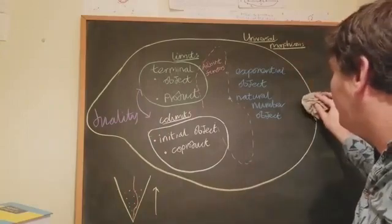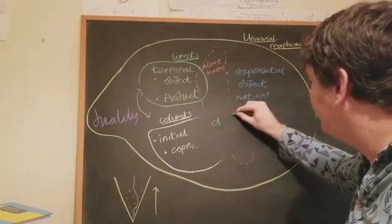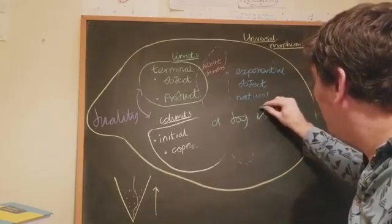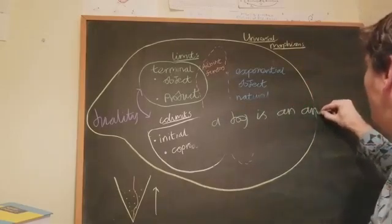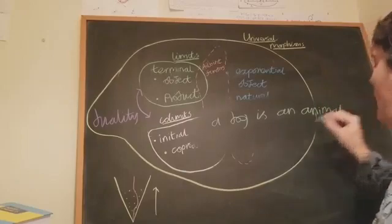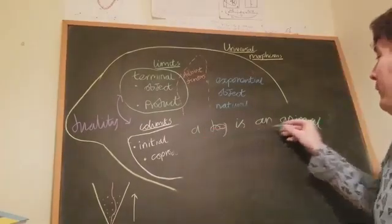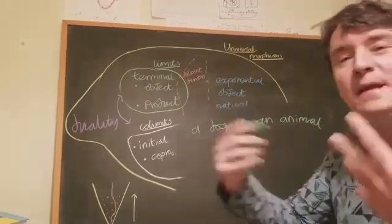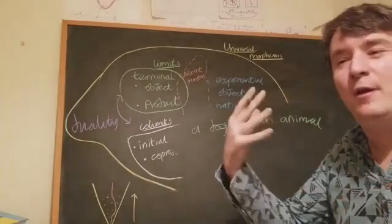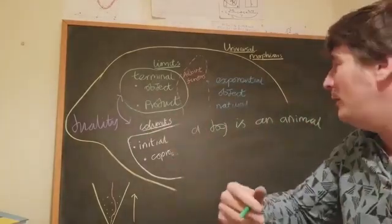We can consider the sentence, a dog is an animal. And we can ask, well, what does that mean? How can we understand what this sentence, a dog is an animal, means in terms of mathematics, in terms of dots and arrows, in a kind of categorical sense?